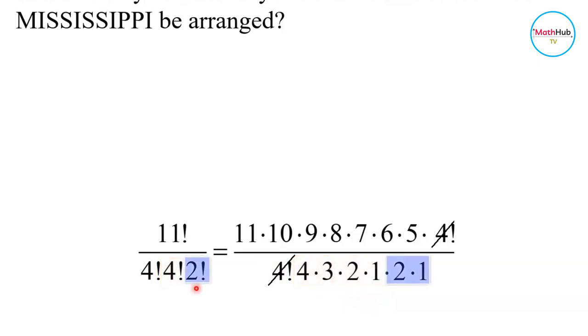Now 4 factorial in the numerator can be cancelled with the 4 factorial in the denominator. Multiplying the numerator divided by the product in the denominator, that gives you 34,650.